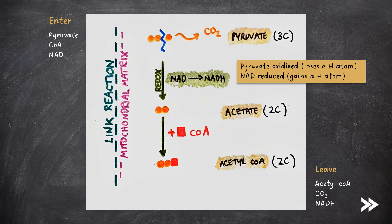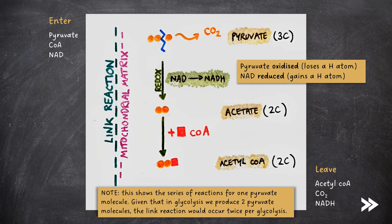Note, however, that this shows the series of reaction for one pyruvate molecule. Given that in glycolysis we produce two pyruvate molecules, the link reaction would occur twice per glycolysis.